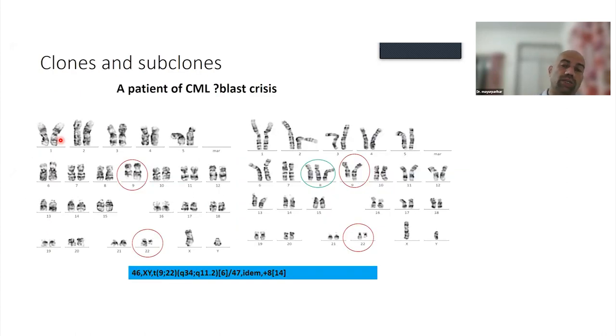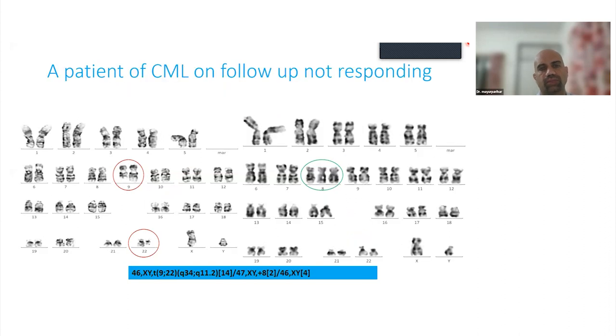When you look at karyotyping, you also look at clones and subclones. If you look at this patient, there are 6 metaphases showing 9;22 and 14 metaphases showing 9;22 plus trisomy 8. So this clone is now evolving, has acquired trisomy 8, and this patient is moving towards blast crisis. Sometimes what may happen - this was again a patient of CML who continued to have dysplasia and some amount of pancytopenia. He was on imatinib, and when we did karyotyping, we just found the trisomy 8. We did not find the 9;22. So you can have a pH negative clone also come up in patients who are getting imatinib.